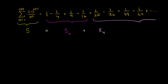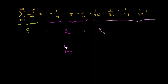We can calculate the partial sum. Using a common denominator — nine times 16 is 144 — so it's 144 over 144, minus 36 over 144, plus 16 over 144, minus nine over 144. That gives us 144 minus 36 plus 16 minus 9: that's 124 minus 9, which is 115. So this is all going to be equal to 115 over 144, plus some remainder. If we can figure out bounds on this remainder, we can figure out bounds on our actual sum.